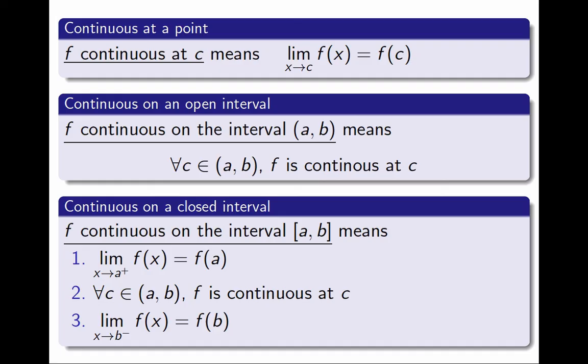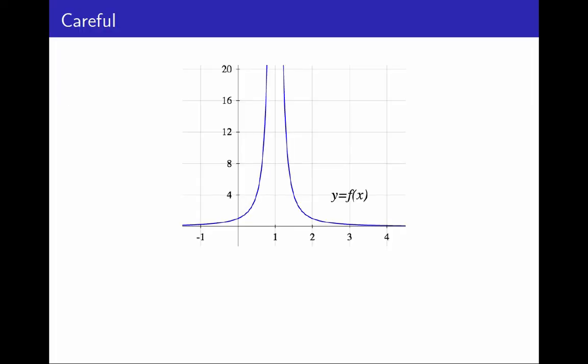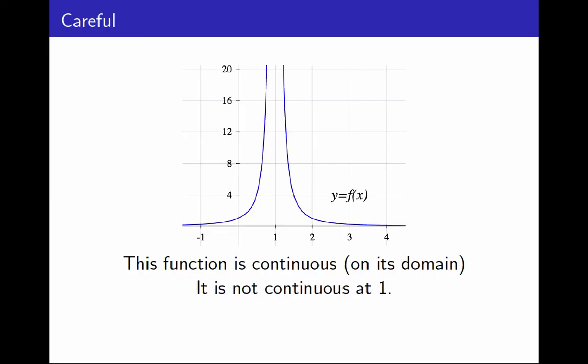And finally, one more concept. If we ever simply say that a function is continuous without specifying where, we mean continuous on its domain. Careful, though, because things like the following may happen. Look at the function in this graph. It is continuous, if by continuous we mean continuous on its domain, but it is not continuous at 1. This may sound like a contradiction, but it is not, if you pay attention to the precise definitions that we have given to the concepts.